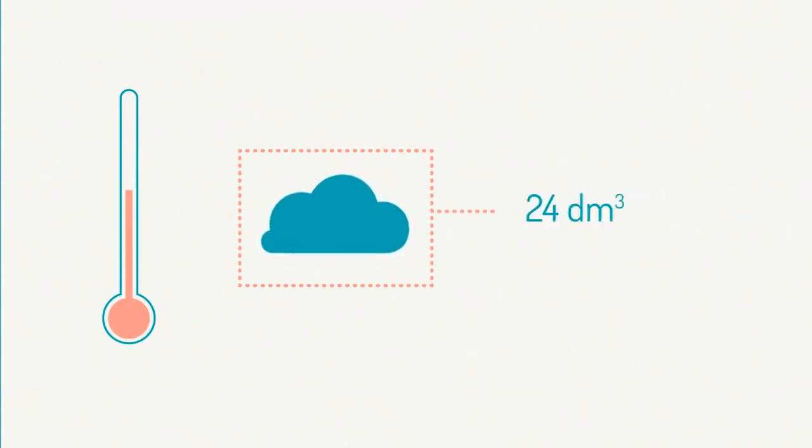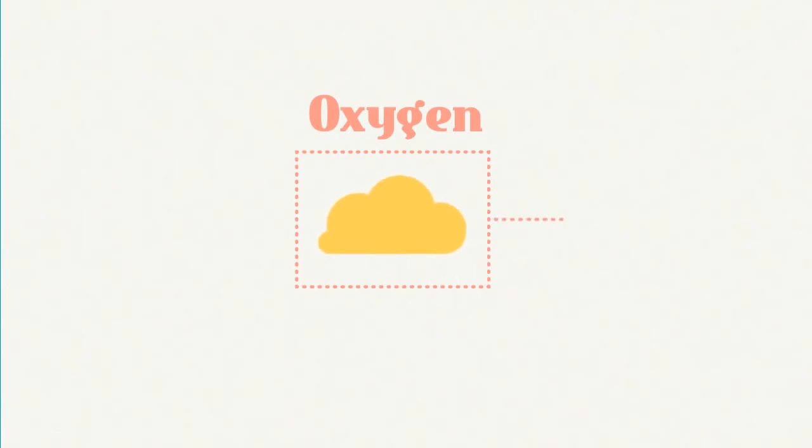Okay, so let's look at what we already know. We know that one mole of any gas at room temperature occupies 24 decimetres cubed. One mole of oxygen gas, O2, has a mass of 32 grams.